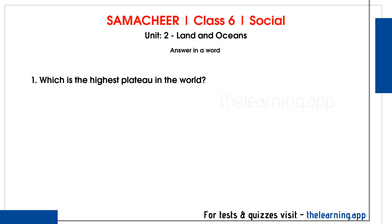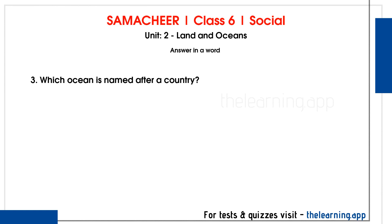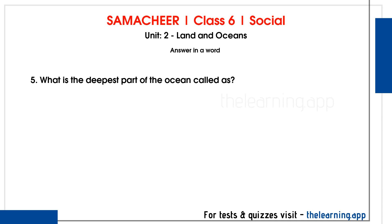Now answer in your own words. First: which is the highest plateau in the world? Correct answer: Tibetan Plateau. Second: name a second order landform. Correct answer: mountain, plateau, plains — all are second order landforms. Third: which ocean is named after a country? Correct answer: Indian Ocean. Fourth: name the island located in the Arabian Sea. Correct answer: Lakshadweep Islands. Fifth: which is the deepest part of the ocean called? Correct answer: trench.